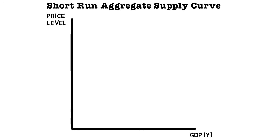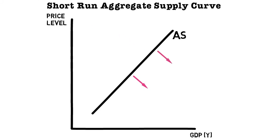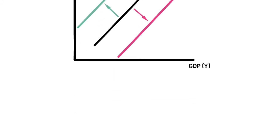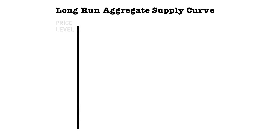Looking at the short-run supply curve: we have price level on the y-axis, GDP on the x-axis, and an upward sloping line showing that as prices go up, GDP and supply go up as well. The arrows indicate that the supply curve can shift rightwards, indicating an increase in aggregate supply, or leftwards — shown as AS2 — indicating a decrease in aggregate supply. There are a number of drivers behind these shifts, which initially come from the long run.